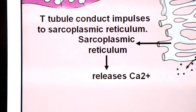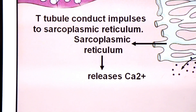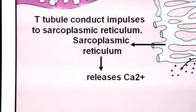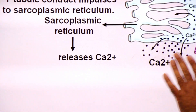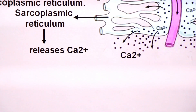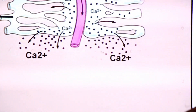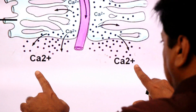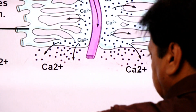The sarcoplasmic reticulum releases calcium ions into the cytoplasm or cytosol. When the signal reaches the smooth endoplasmic reticulum, it releases calcium ions into the cytosol.